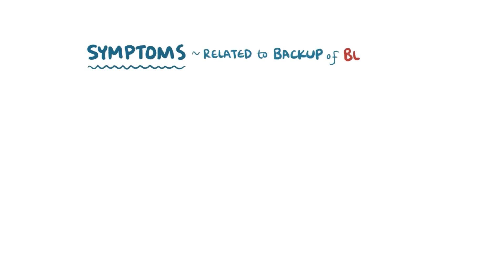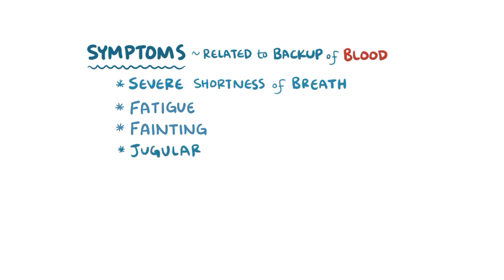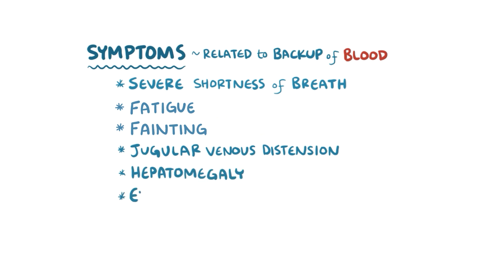Because cor pulmonale stems from pulmonary hypertension, the symptoms are all related to the backup of blood in the venous system. Pulmonary hypertension can lead to severe shortness of breath, fatigue, and fainting, and right-sided heart failure can cause blood to back up from the body, causing jugular venous distension, hepatomegaly, and edema.